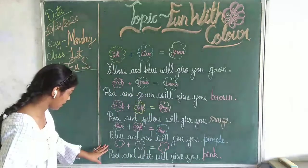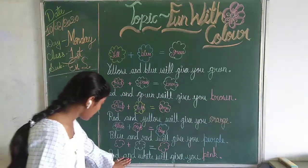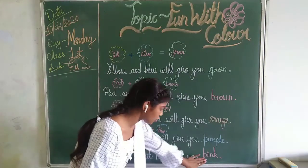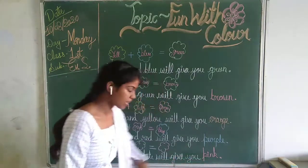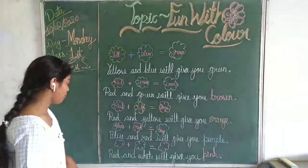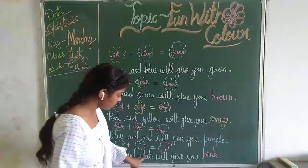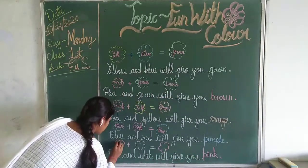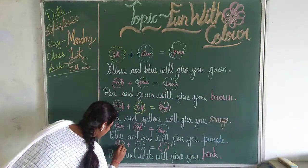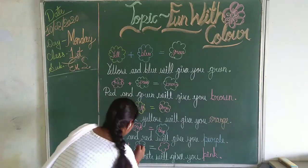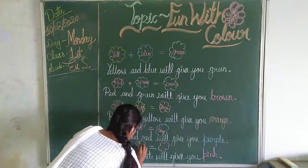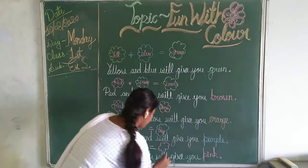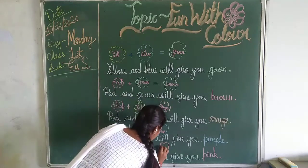Next, red and white will give you which color? Pink color. Red and white will give you which color? Pink color. Red and white will give you pink color.